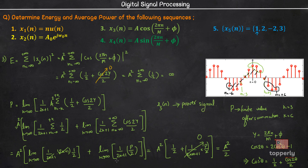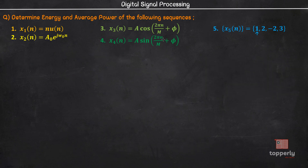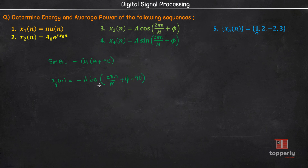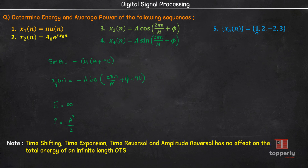Now x4(n) = a·sin(2πn/M + φ). Since sin(θ) = -cos(θ + 90°), x4(n) = -a·cos(2πn/M + φ + 90°). You can proceed to find the energy and power just like we did for x3(n). The energy of x4(n) will be infinite and the average power will be a²/2. Note that the negative sign is not a problem since we square the signal in our calculations. Also note there is no effect of time shifting, time expansion, time reversal, or amplitude reversal on the total energy of an infinite-length discrete time signal.